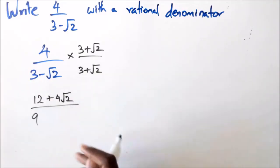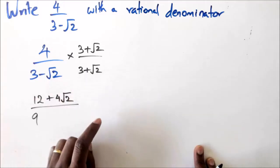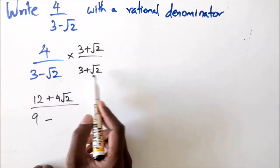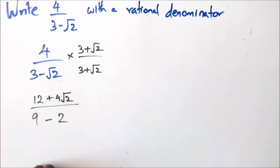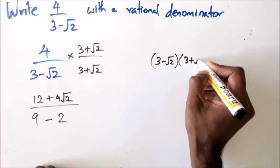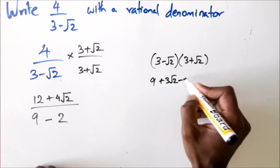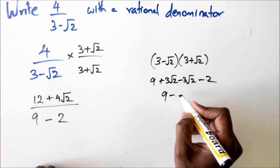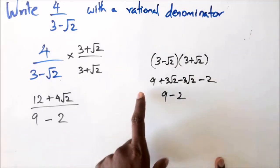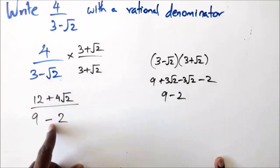For the denominator, here's a shortcut: when rationalizing the denominator, take the first term, square it, put a minus, then take the second term and square it. In this case that's 3² minus (√2)² which is 9 minus 2 equals 7. If you did it the long way using FOIL, you'd get 9 plus 3√2 minus 3√2 minus 2, which also simplifies to 7. The shortcut gets you straight to that step.